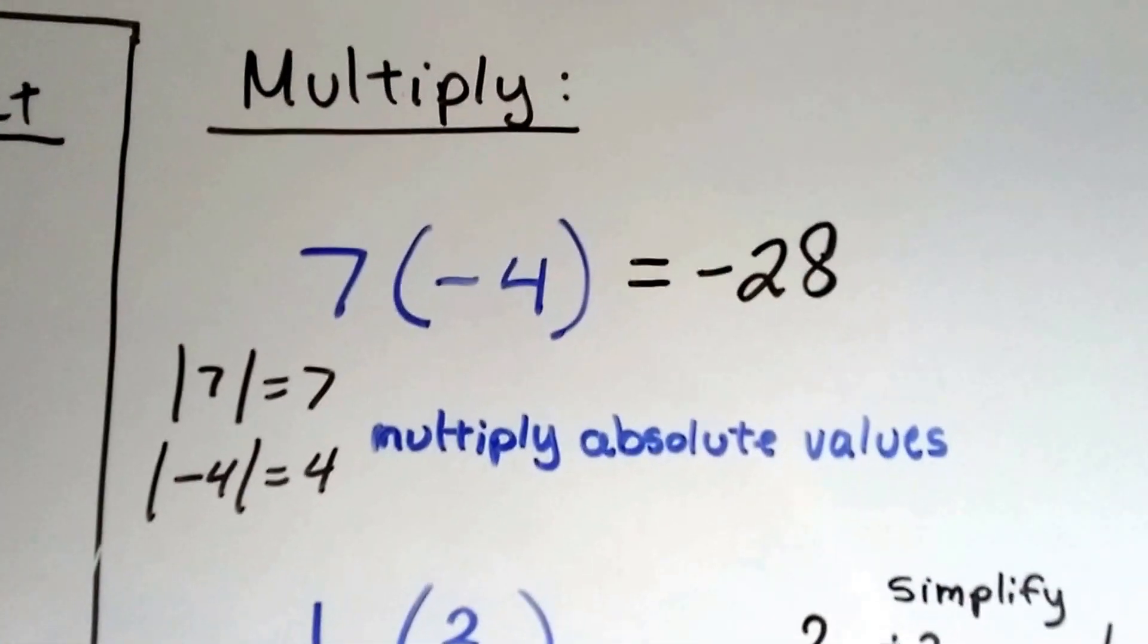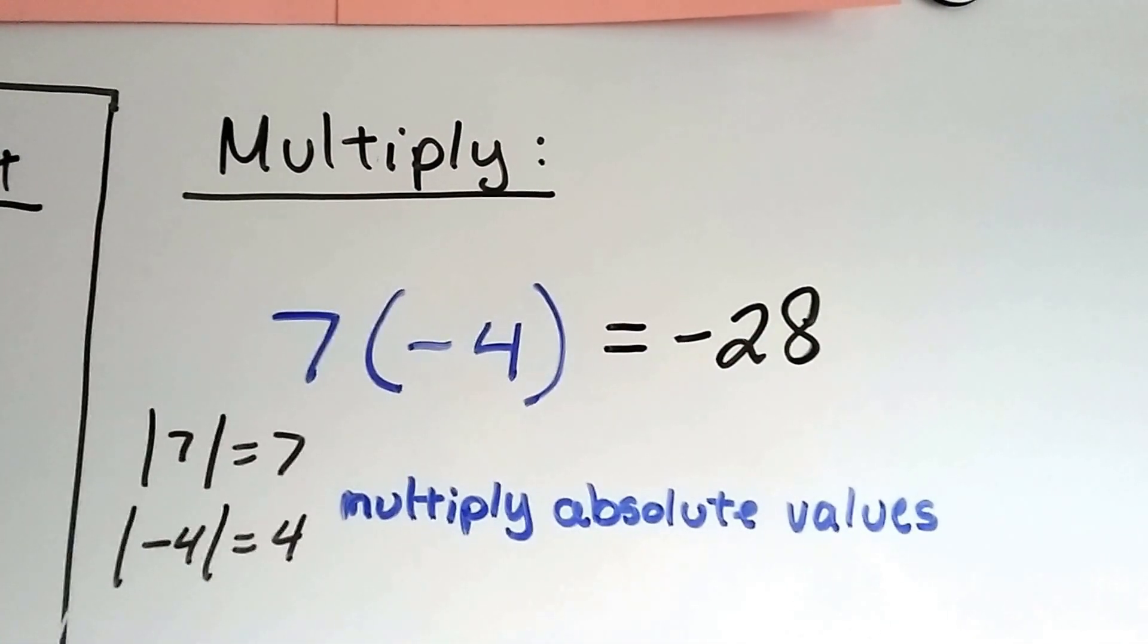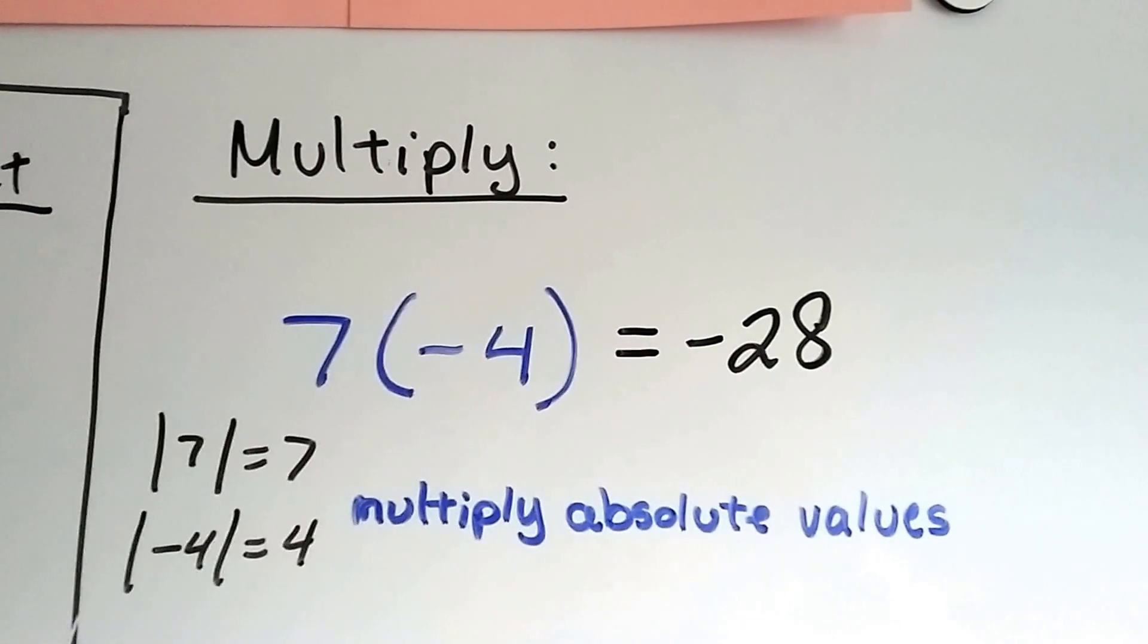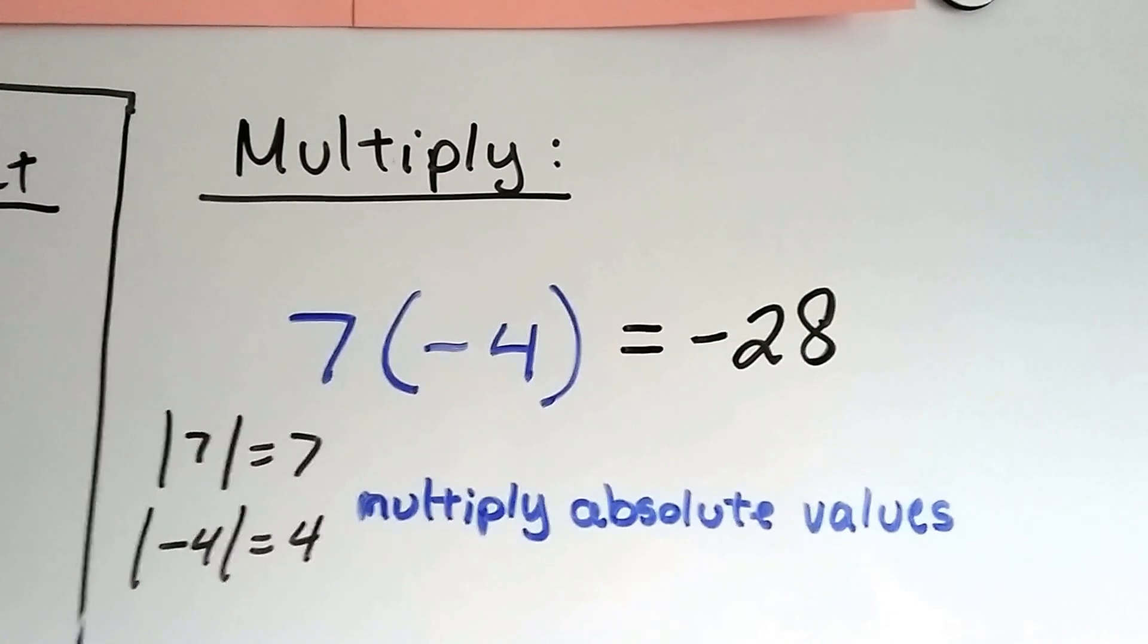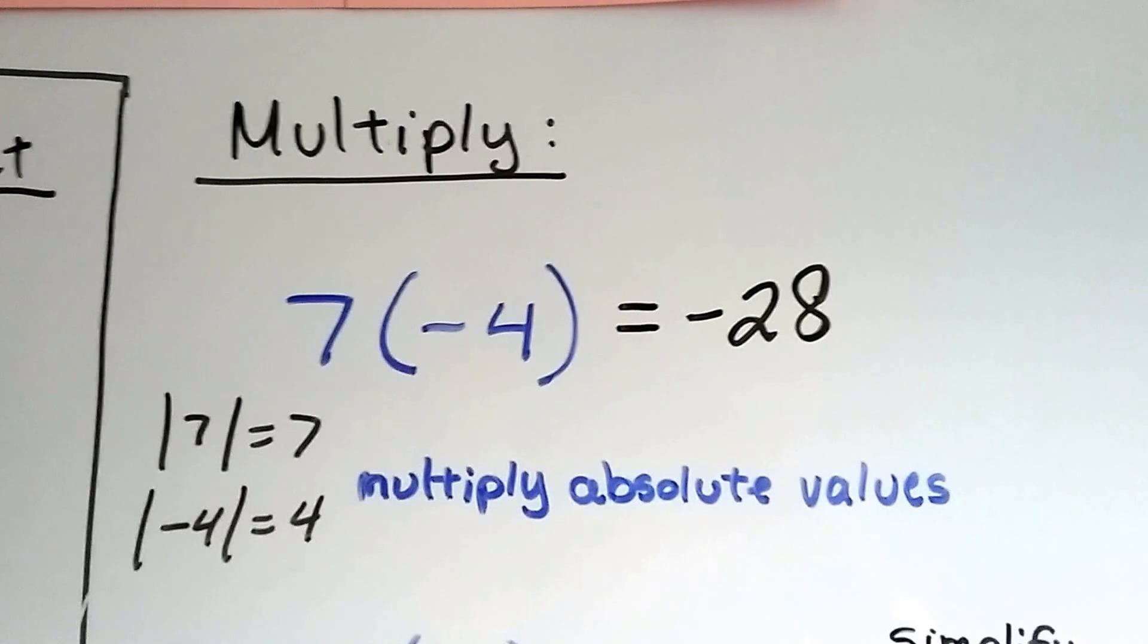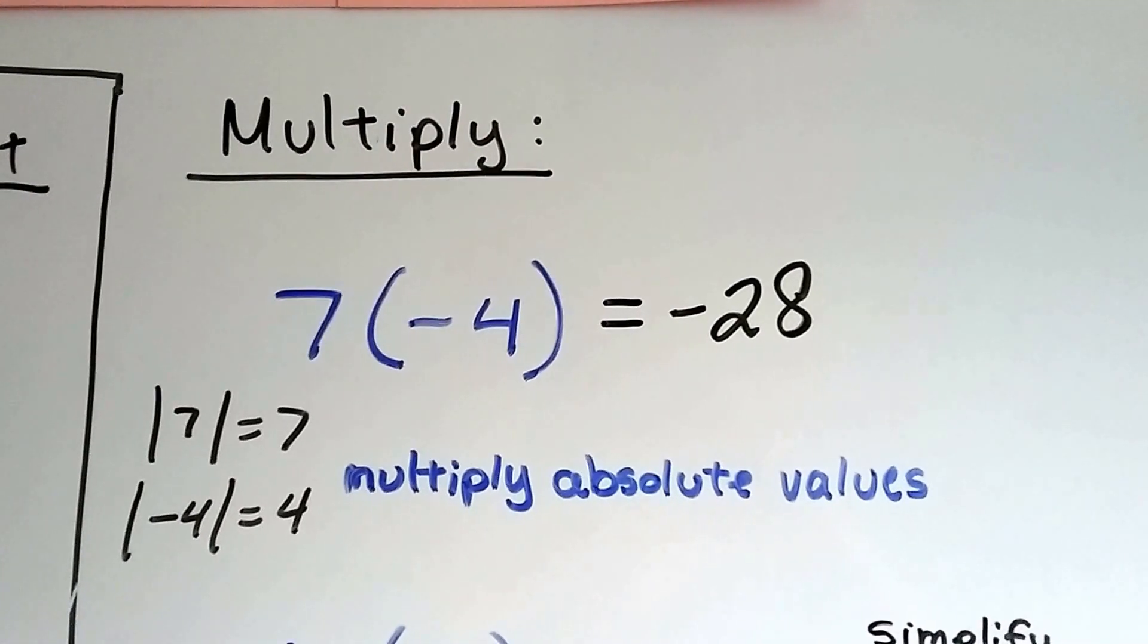So we're going to multiply 7 times negative 4, and what we do is we find their absolute values and multiply them, and because they have unlike signs, it's going to be a negative product. So the absolute value of 7 is 7, and the absolute value of negative 4 is 4. 7 times 4 is 28. Unlike signs? Negative answer. Negative product. Negative 28.